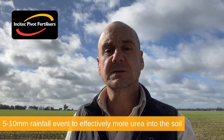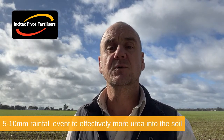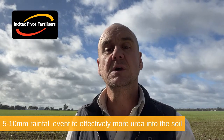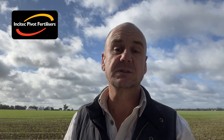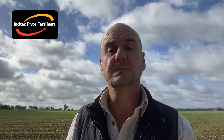Your only friend in top dressing urea is rain, and in significant amounts — typically 10 millimetres would be considered adequate to move urea deep enough into the soil so the ammonium has enough exchange sites to successfully absorb. Alkaline soils, localized alkalinity from the urea granules, dew or showery rain, wind, higher organic carbon soils, lighter soils, and open canopies all increase the risk profile of volatilization.